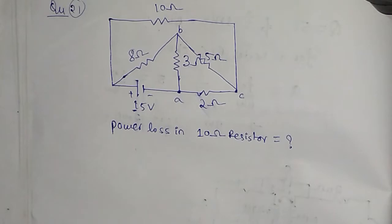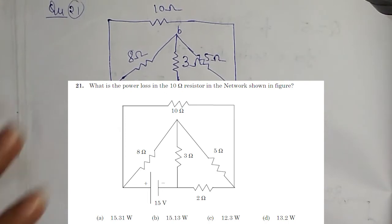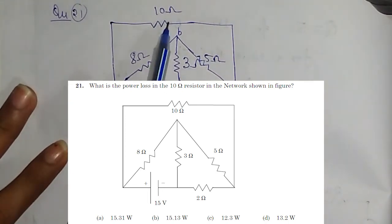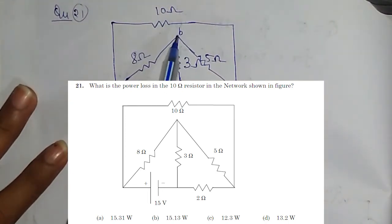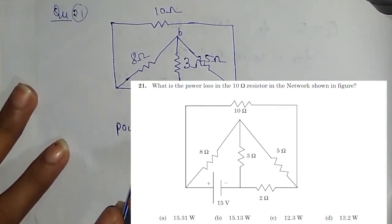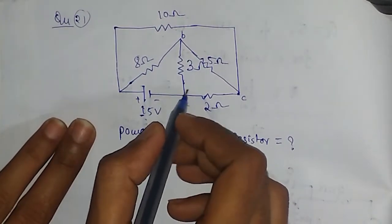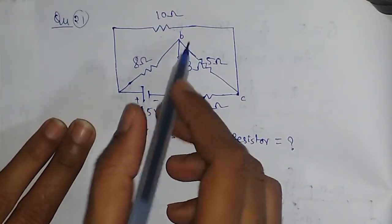Hello friends, welcome to Gate Gyan. This is the network circuit we have given. You have to find the power loss across the 10 ohm resistor. What I will do is simplify the circuit. We can see that between points a, b, and c we have a network in delta form.